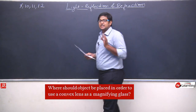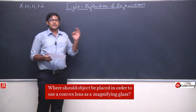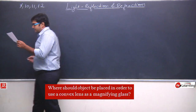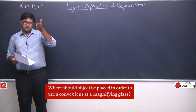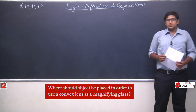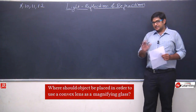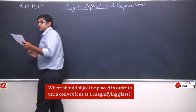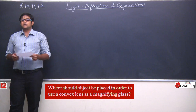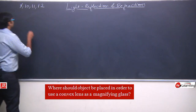It is a very important and interesting question. It says: where should an object be placed in order to use a convex lens as a magnifying glass? Mujhe agar ek convex lens ko ek magnifying glass ki tarah use karna hai, to mein object ko kahan pe rakhoun? Kahan pe rakhne ka matlab lens ke pole ke respect mein kahan object ko place karein — at focus, between focus and pole, or somewhere else? In sabhi situations ko hum analyze karenge.